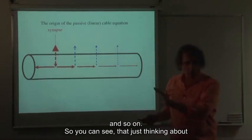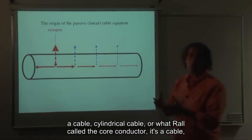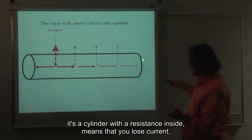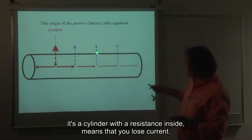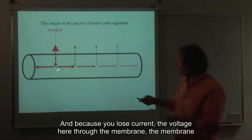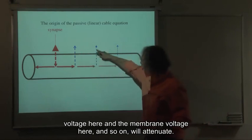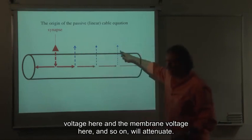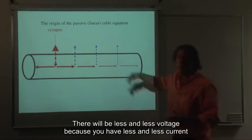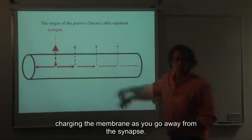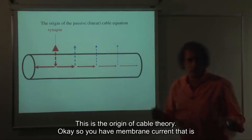Thinking about a cable — a cylindrical cable, or what we call the core conductor — it is a cylinder with a resistance inside, meaning you lose current. Because you lose current, the membrane voltage here, and there, and further along, will attenuate. There will be less and less voltage, because you have less and less current charging the membrane, as you go away from the synapse. This is the origin of cable theory.